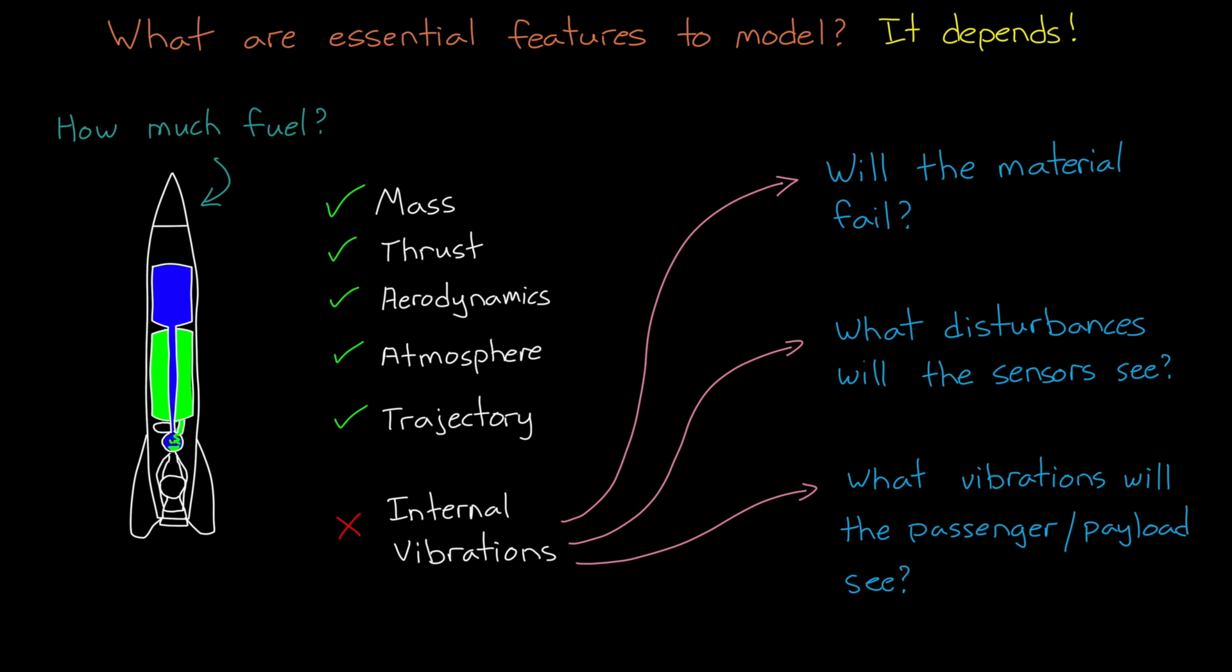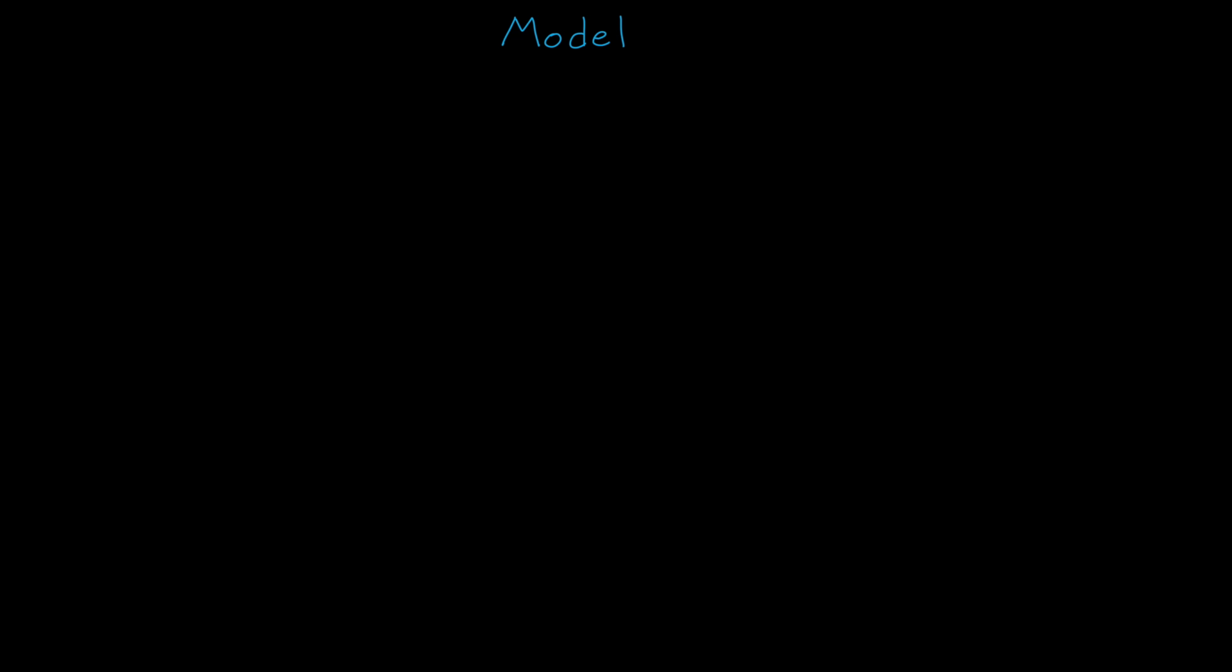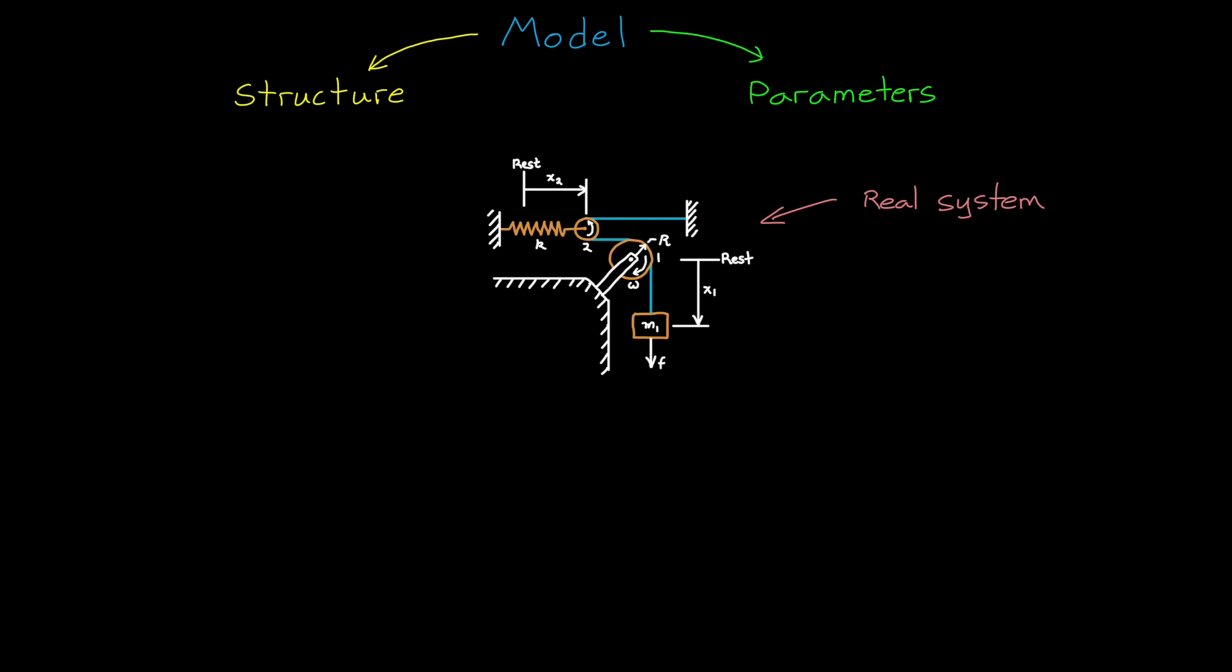So what is represented in a model is situation-dependent. But how do we represent that information? That's the next question. In general, a model is composed of two main parts. There is the structure and there are the parameters. Let me explain this with an example. Let's take this physical system with a mass, two pulleys, and a spring. I want a model that can predict the motion of the mass given an input force. I could represent this system with this model, which is an ordinary differential equation where f is the input force and x1 is the output.